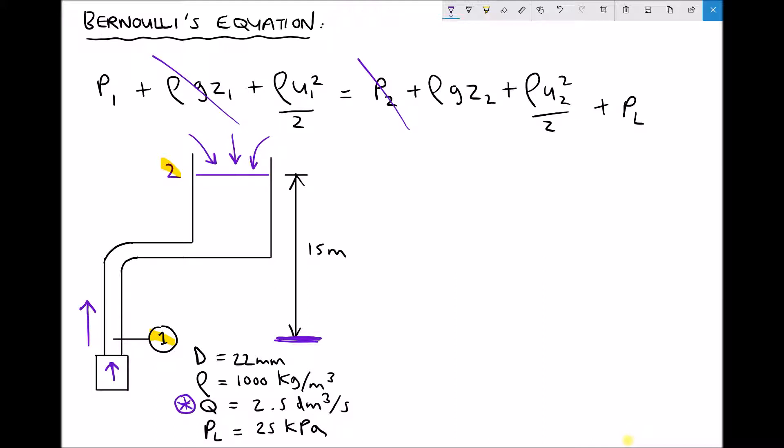The next term is rho g z2. Well if position 1 is at an elevation of 0 then position 2 is at an elevation of 15 metres. So rho g z2 is going to have a value.